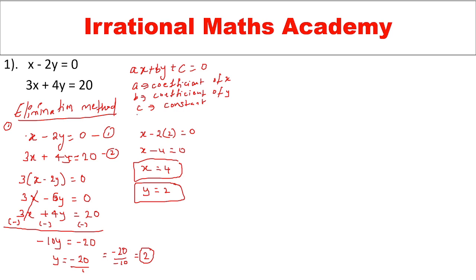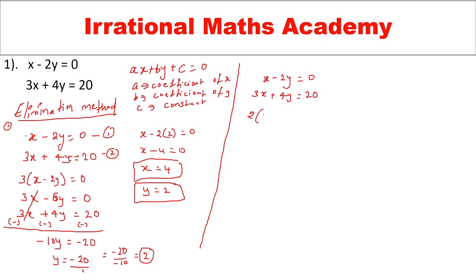This was when I eliminated x. It is not necessary to always eliminate x — I can eliminate y also. Let me do that with the same equations: x minus 2y equal to 0 and 3x plus 4y equal to 20. Looking at the coefficients of y, here it is minus 2 and here it is plus 4. I will multiply the first equation by 2, giving 2x minus 4y equal to 0.